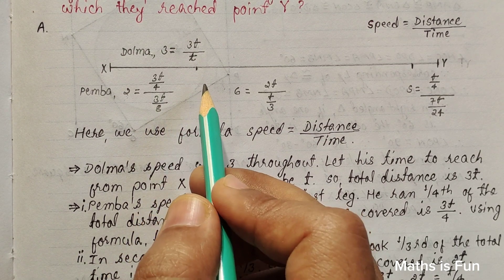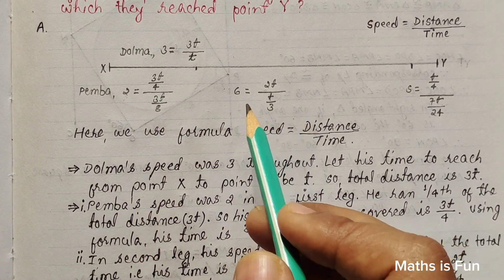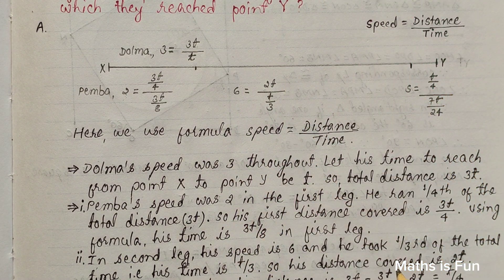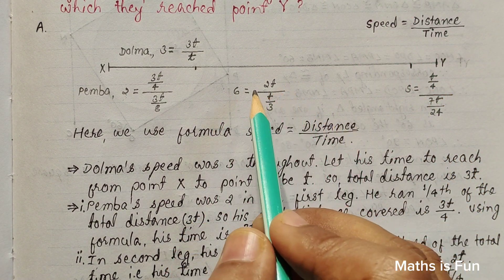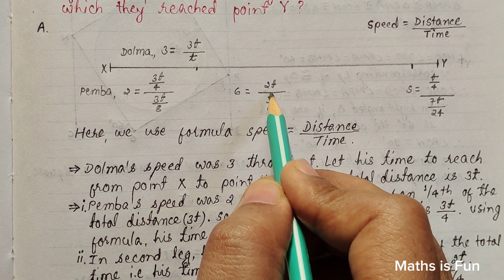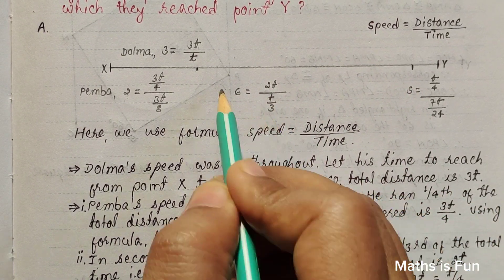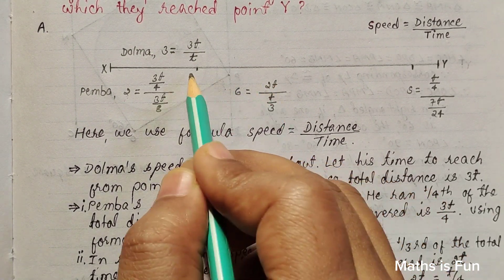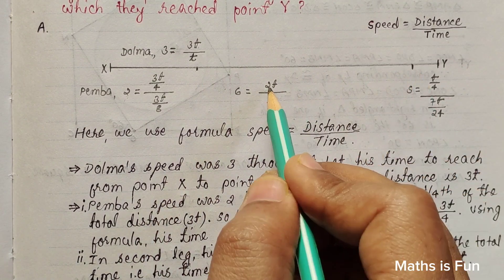Then Pemba changed his speed and he made his speed 6, which is already given in the question. Then he took one third of the total time in this leg of his journey. So we can keep in time T over 3, in speed we can keep 6, so we can easily calculate his distance. This leg of his distance is 2T.